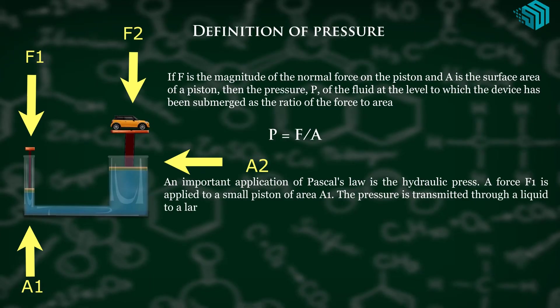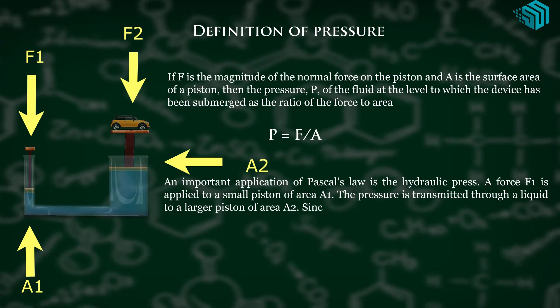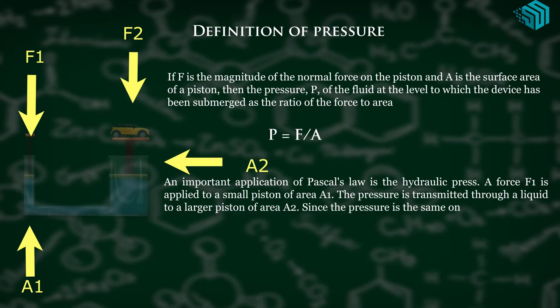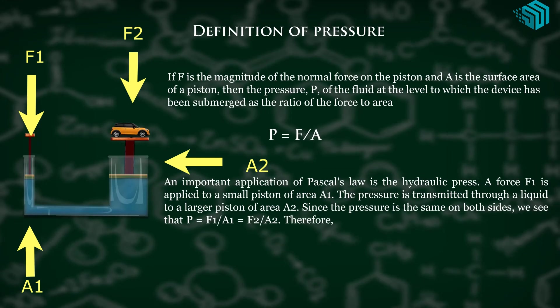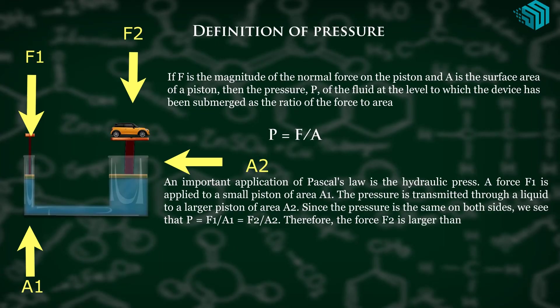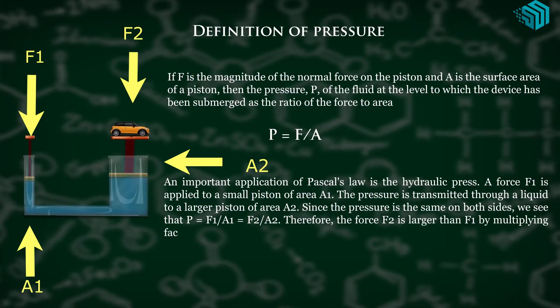Since the pressure is the same on both sides, we see that P is equal to F1 upon A1 equal to F2 upon A2. Therefore, the force F2 is larger than F1 by multiplying factor A2 upon A1.